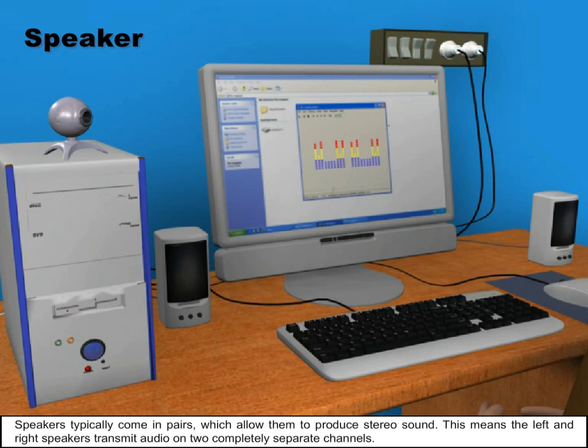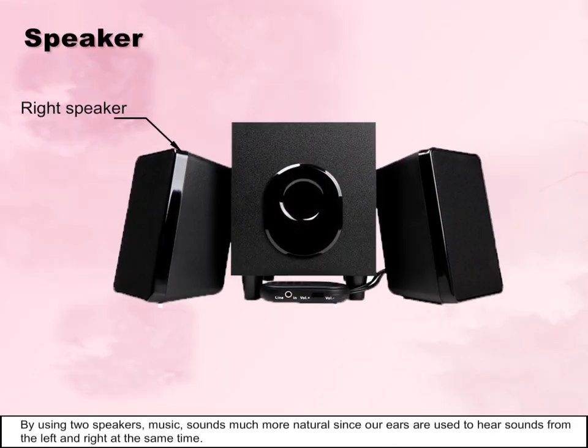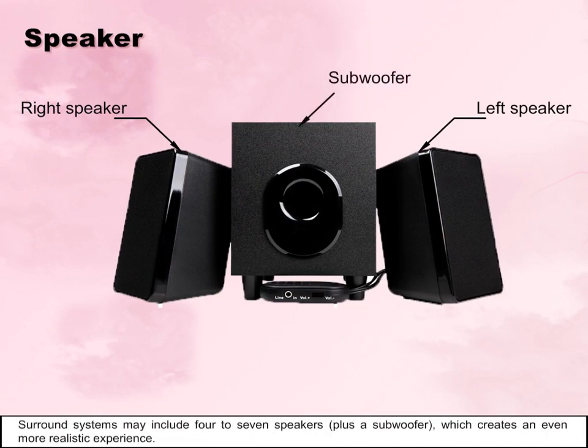Speakers typically come in pairs which allow them to produce stereo sound. This means the left and right speakers transmit audio on two completely separate channels. By using two speakers, music sounds much more natural since our ears are used to hearing sounds from the left and right at the same time. Sound systems may include four to seven speakers plus a subwoofer, which creates an even more realistic experience.